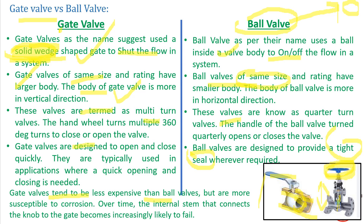Gate valves tend to be less expensive than ball valves because the ball material is costly. Ball valves, due to their compactness, have higher pressure ratings compared to gate valves. Gate valves are more susceptible to corrosion because they have a large amount of solid parts directly exposed to flow. There are also maintenance issues — sometimes the wedge gets disconnected from the spindle, and in that case the complete gate valve needs to be replaced.